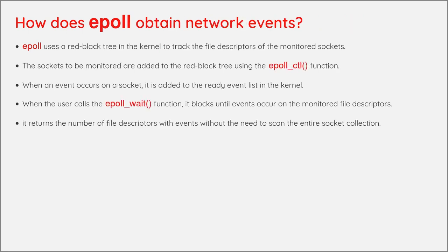How does EPOLL obtain network events? EPOLL uses a red-black tree in the kernel to track the file descriptors of the monitored sockets. The sockets to be monitored are added to the red-black tree using the epoll_ctl function. When an event occurs on a socket, it is added to the ready event list in the kernel. When the user calls the epoll_wait function, it blocks until events occur on the monitored file descriptors and returns the number of file descriptors with events without the need to scan the entire socket collection.